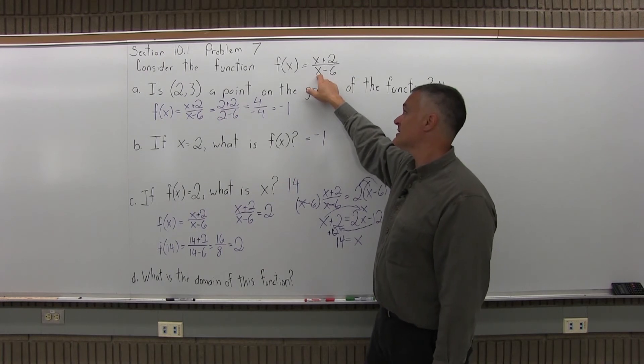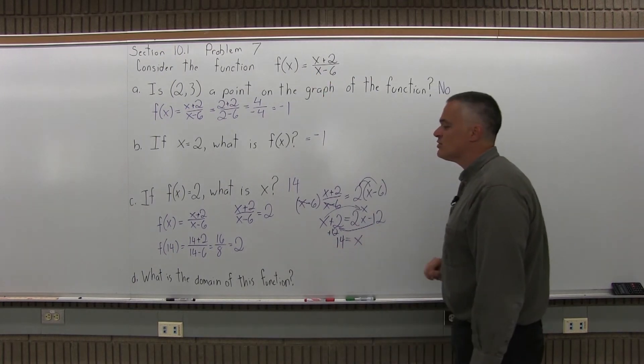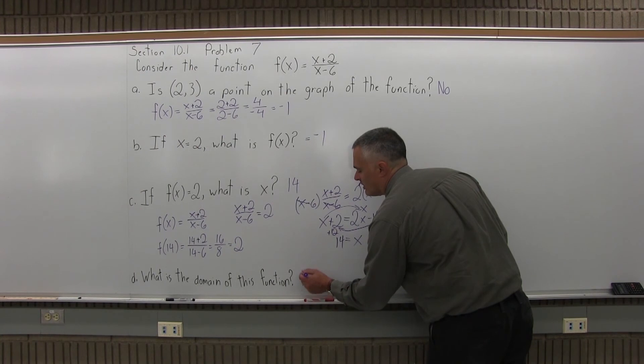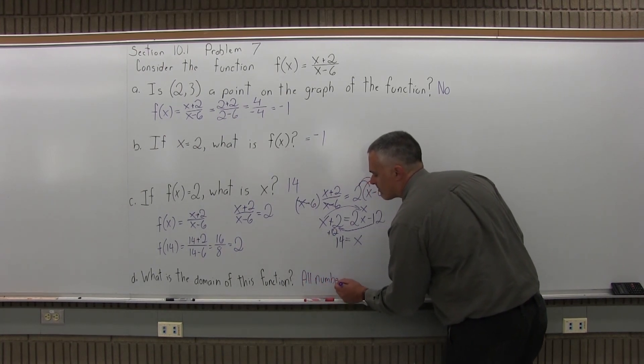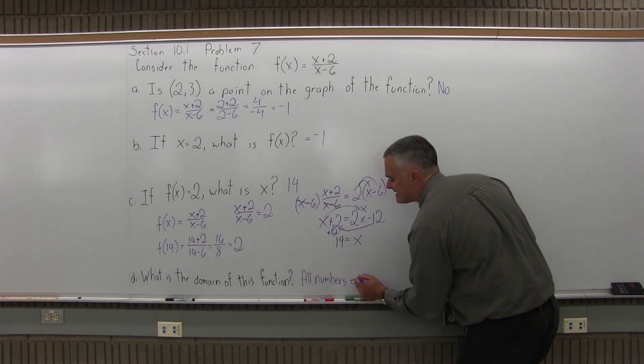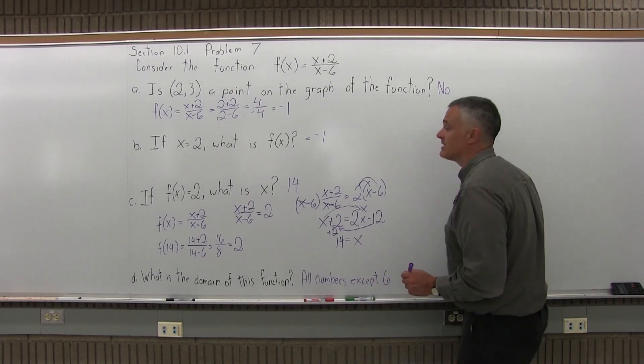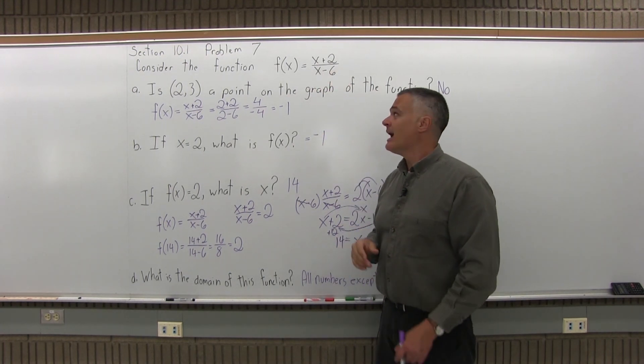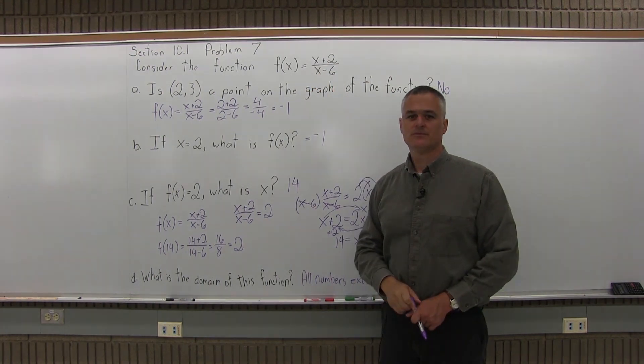If I put in a 6, the bottom of my function is going to be 6 minus 6. I'll have a 0 in the denominator. So the answer to what is the domain of this function: it's all numbers except 6, or positive 6. I can actually put in a negative 6, that's fine. I can put in a 0. The only thing I can't put in is a 6.